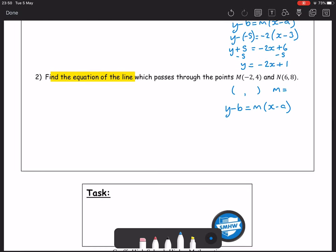6, 8 is our point and our gradient is what's letting us down. Therefore, what we require to do is work out a gradient of mn using our gradient formula.